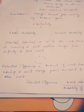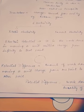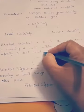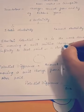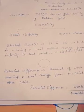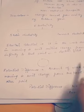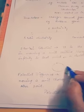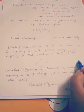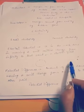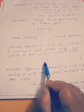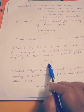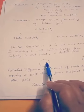Now coming to the next topic, that is electric potential. What is electric potential? It is the work done in moving a unit positive charge from infinity to that point in an electric field of any charge. If I am bringing a unit positive charge from infinity — that is, from a distance very far away from this electric field — to a point inside the electric field of any charge, then the work done in moving that charge will be my electric potential.